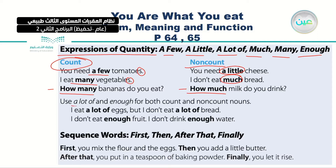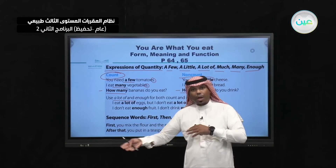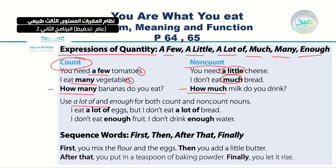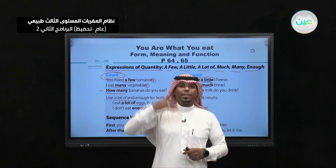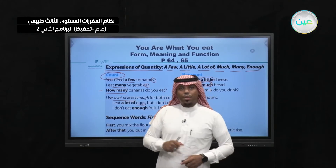Let's move to 'a lot of' and 'enough'. What about them? 'A lot of' and 'enough' can be used with both countable and non-countable nouns. For example: 'I eat a lot of eggs' — countable — 'but I don't eat a lot of bread' — non-countable. And: 'I don't eat enough fruit, and I don't drink enough water.' So these two expressions work with either countable or non-countable nouns.